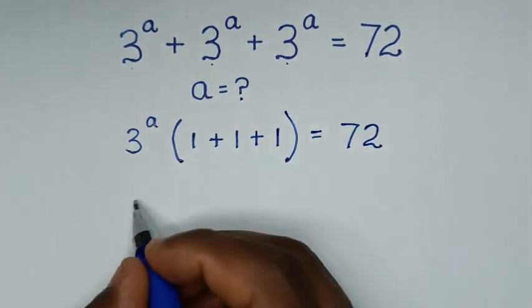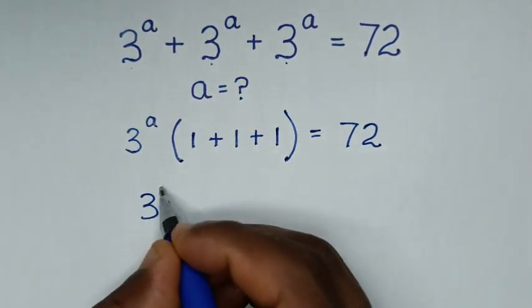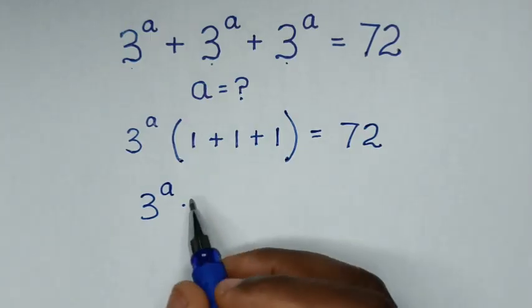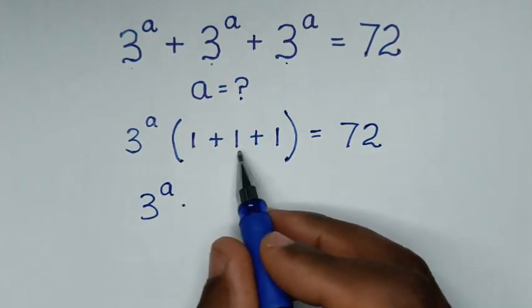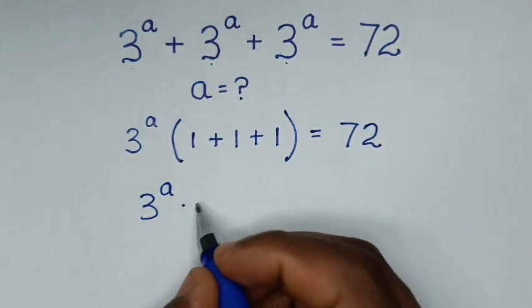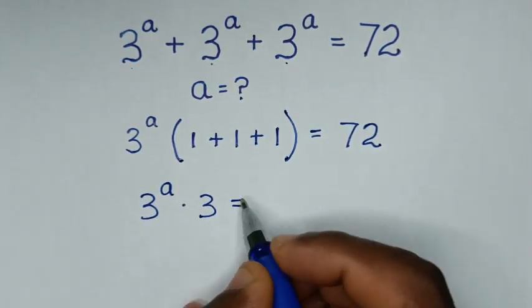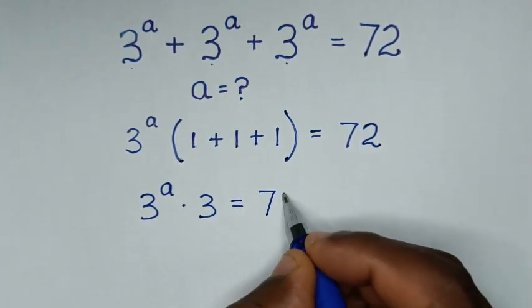Then in the next step, it will be 3^a times 1 plus 1 plus 1, which is 3, is equal to 72.